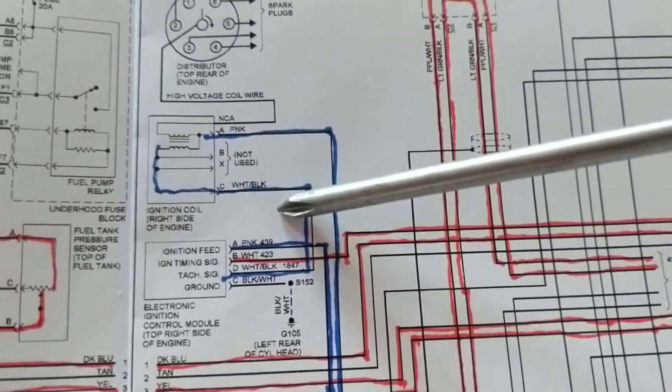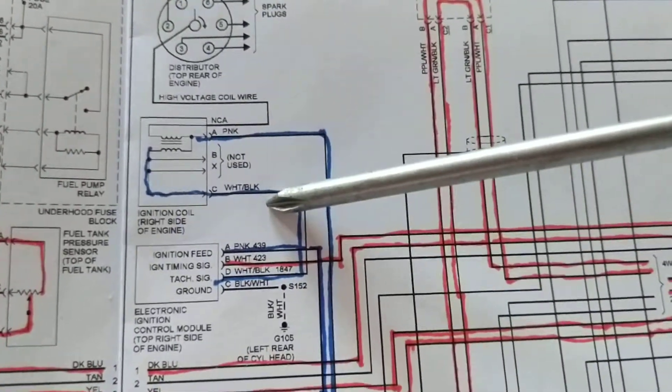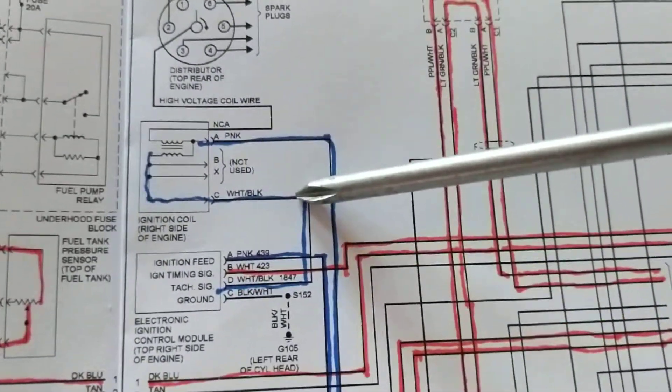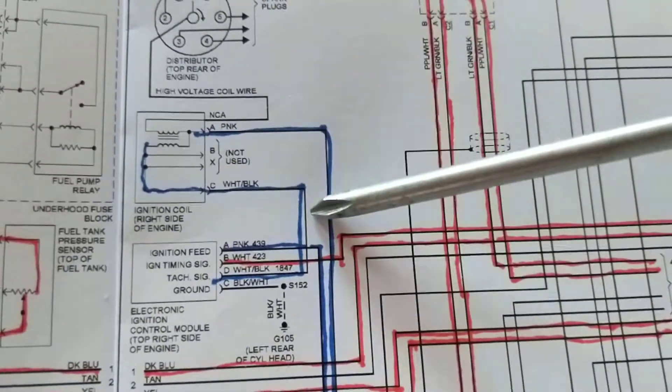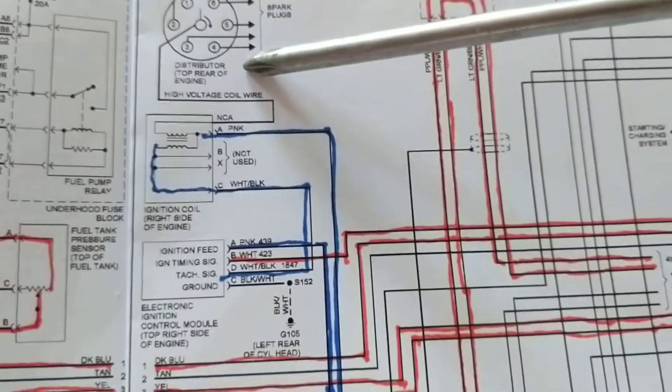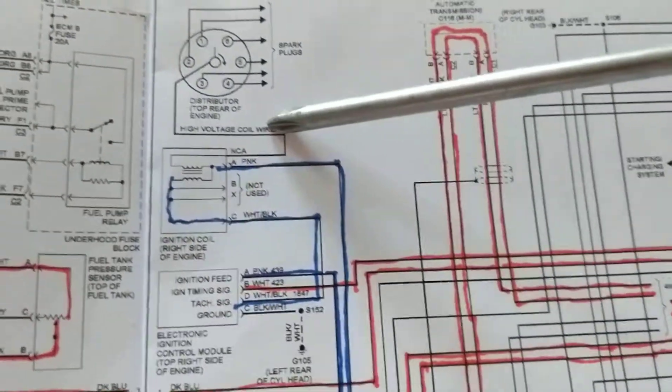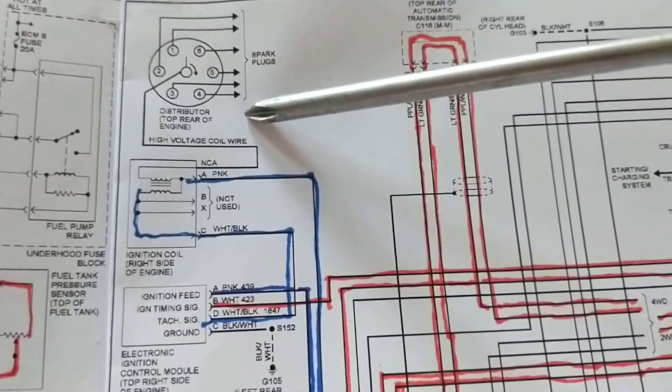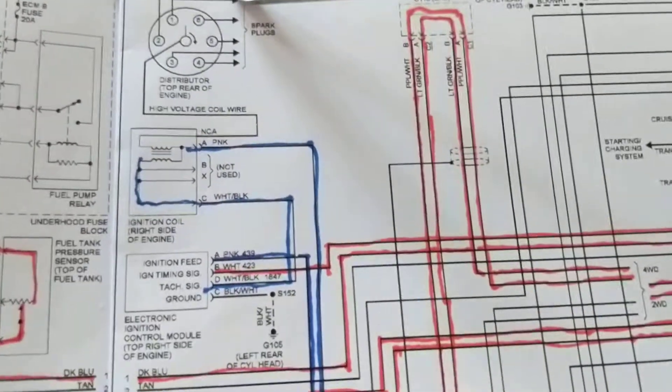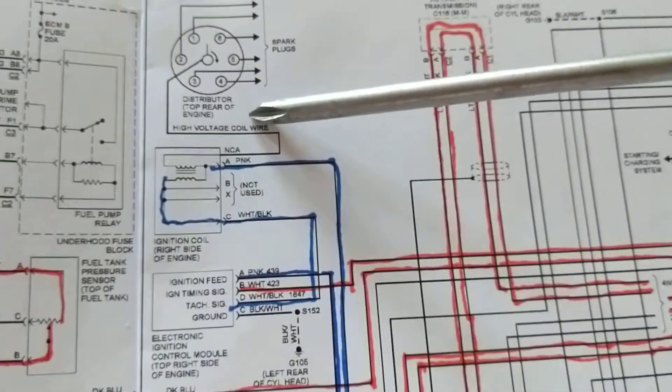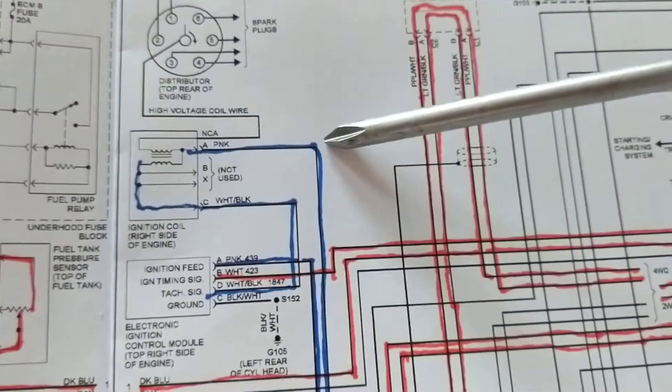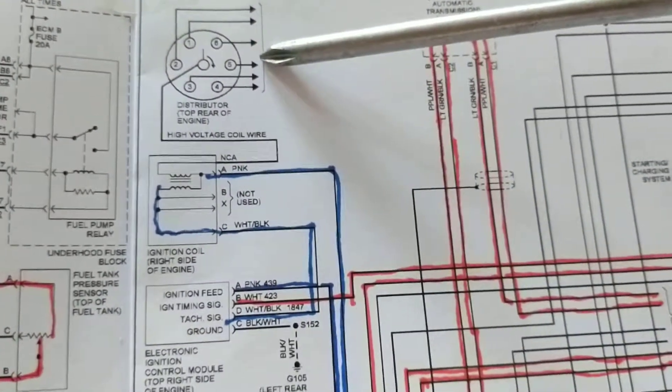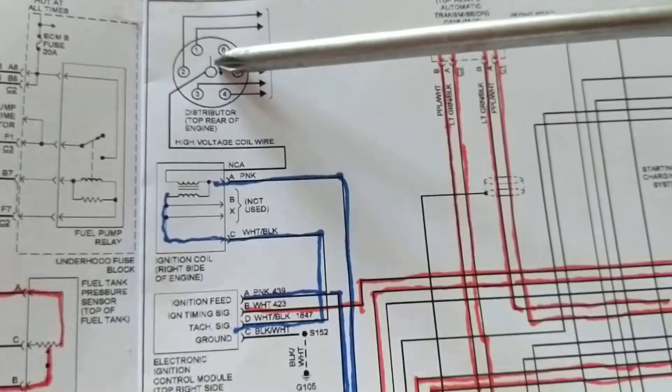When it does not see revolutions, it says okay, I'm not going to turn on fuel injectors to spray fuel into the cylinders because it's not going to be burned. Unburned fuel going out the exhaust to the catalytic converter is the last thing we want. So the computer is doing what it's supposed to do. That's the difference.